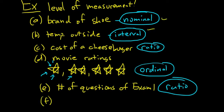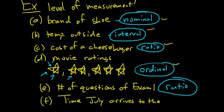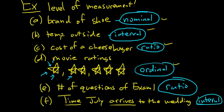We've now covered all four levels. For extra practice: time Julie arrives to the wedding — that's a time of arrival, and zero is not the starting point, so this is interval. Whenever you see time of arrival or departure, or temperature, it's always interval.